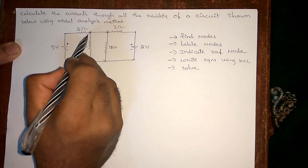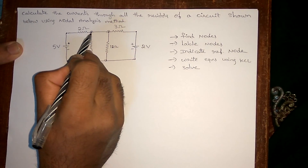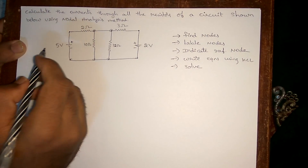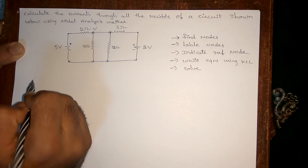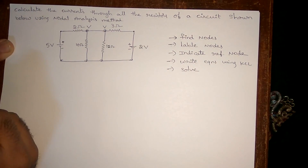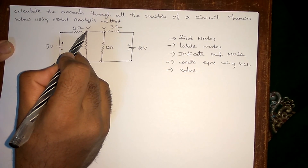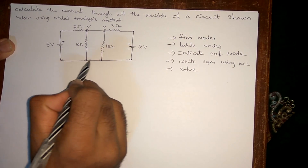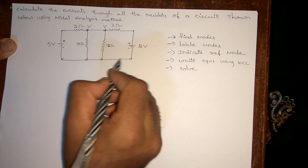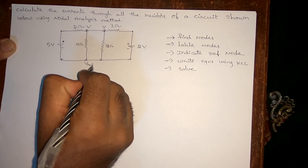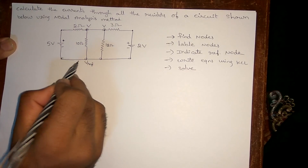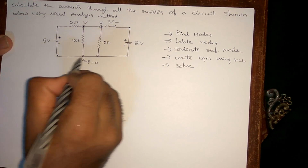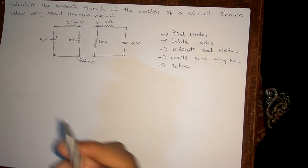When labeling the nodes, observe that some essential nodes are joined together by a simple conductor wire. When they are joined by a simple conductor wire, they belong to the same label. So if you indicate one point as node V, the connected point automatically becomes node V as well. All the points joined together by a single conductor wire are taken as the reference node, which equals zero.